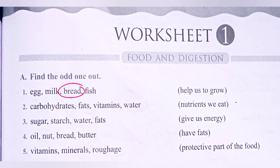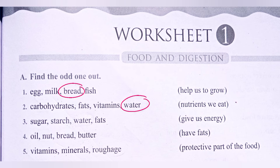Second one: carbohydrates, fats, vitamins, and water. These are nutrients we eat. From these nutrients, carbohydrates, fats, and vitamins are actual nutrients, but water is not a nutrient. This is why water is the odd one out.